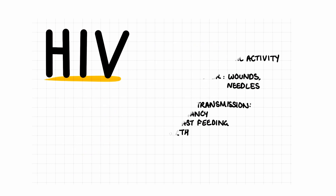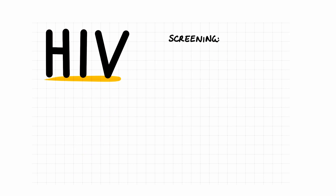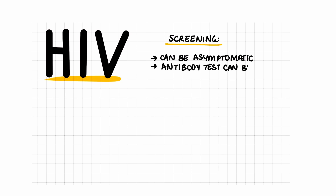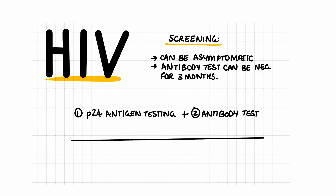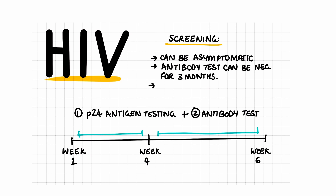A lot of people who have HIV often don't know they have it until it's progressed. This is why screening is so important. However, antibody tests can be negative for up to three months following exposure, so repeat testing is really important as well. The P24 antigen testing is now also done alongside the HIV antibody testing. The P24 antigen testing can show positive results from week one to week four, whereas the antibody testing can be at four to six weeks.